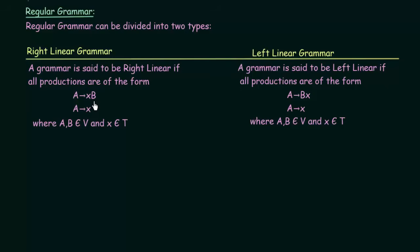If the non-terminal symbol lies to the right of the terminal symbol, it is said to be a right linear grammar. Here, X is a terminal symbol and B, a non-terminal symbol, lies to the right side of X. Left linear grammar is just the opposite: a grammar is left linear if all productions are of the form A → BX or A → X, where B is a non-terminal lying to the left of terminal symbol X.